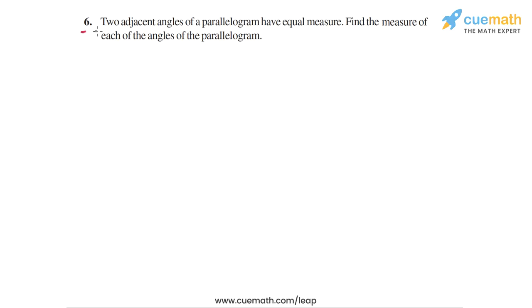In question six, the problem statement says: two adjacent angles of a parallelogram have equal measure. Find the measure of each of the angles of the parallelogram.